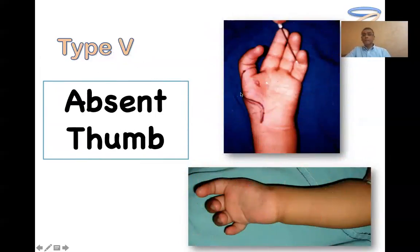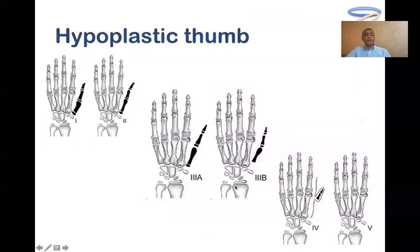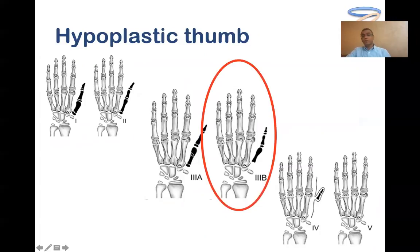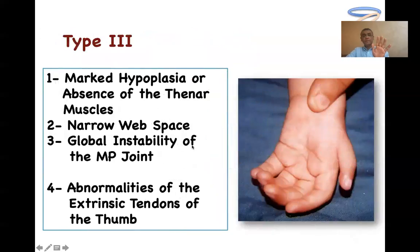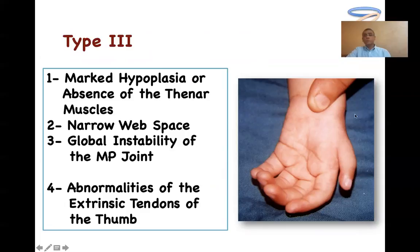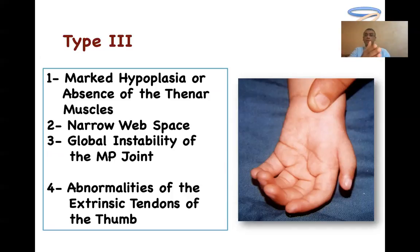Type 5 is complete absence of the thumb. The problem with type 3 is that it presents with a severely hypoplastic thumb, marked narrowing of the web space, and globally unstable metacarpophalangeal joints — meaning ulnar and radial collateral ligament instability — along with severe hypoplasia of the intrinsic muscles. Additionally, type 3 has abnormality of the extrinsic tendons, which we can identify if there is no mobility of the IP joint of the thumb. If there is good IP joint mobility, then it is type 2, not type 3.